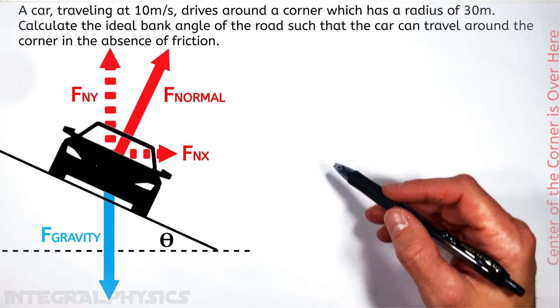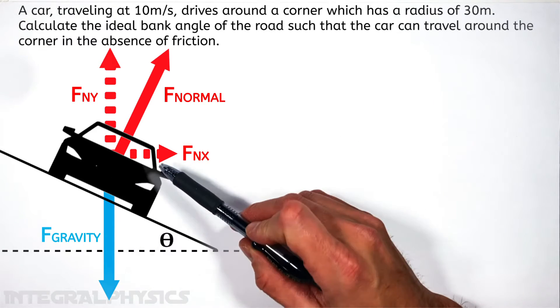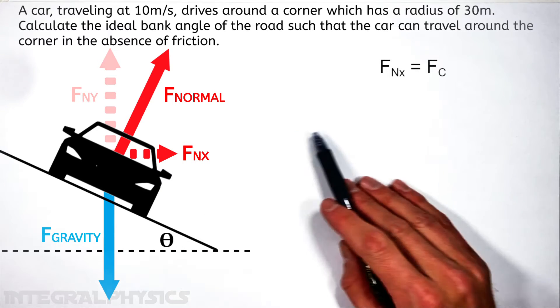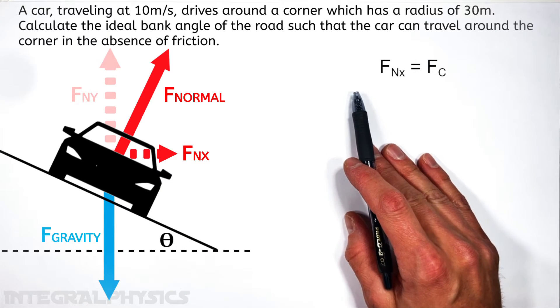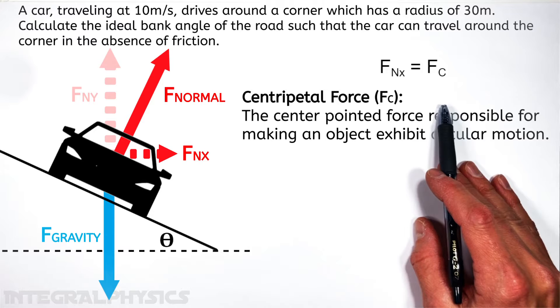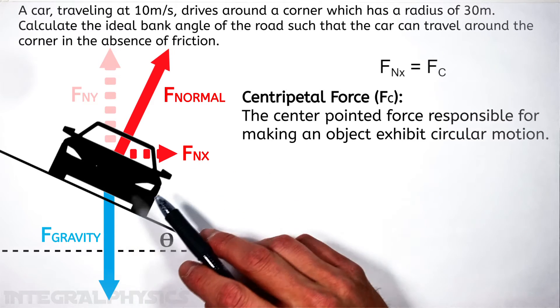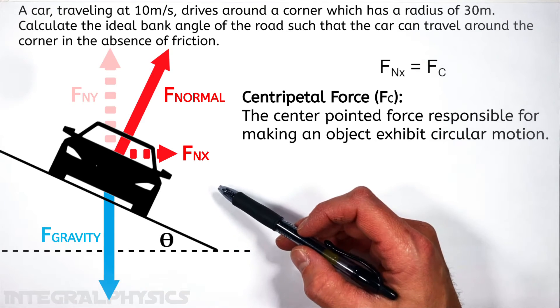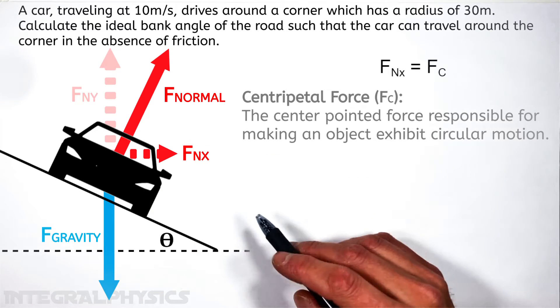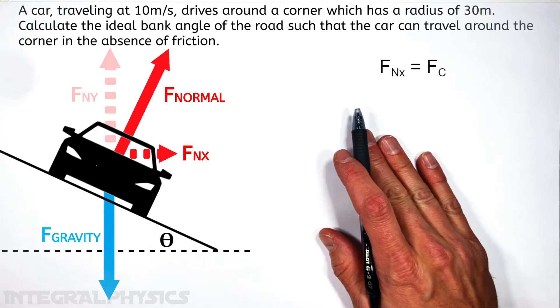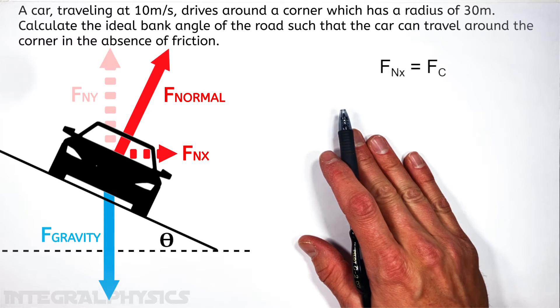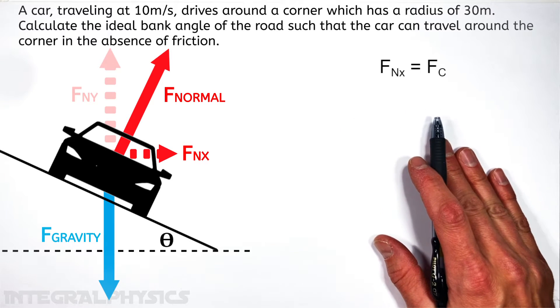Now to put some equations to this, we're going to say the horizontal component of the normal force, I'm going to call that Fnx, is acting centripetally on the car. Anytime something goes in a circle, it's the centripetal force that's responsible for that object going in a circle. So in this case, it's that horizontal component of the normal force which is acting centripetally.